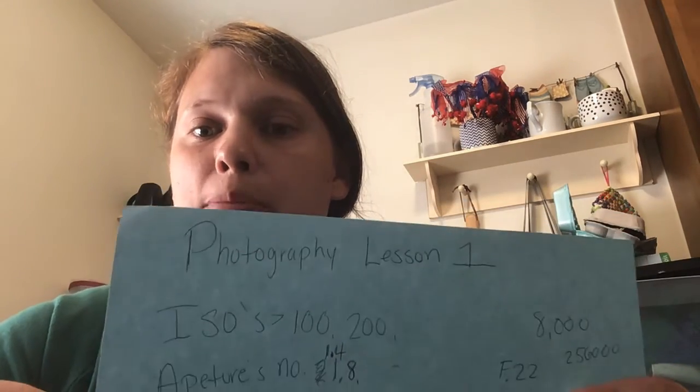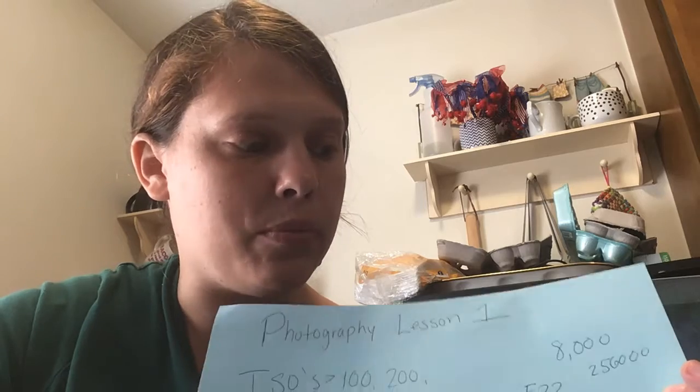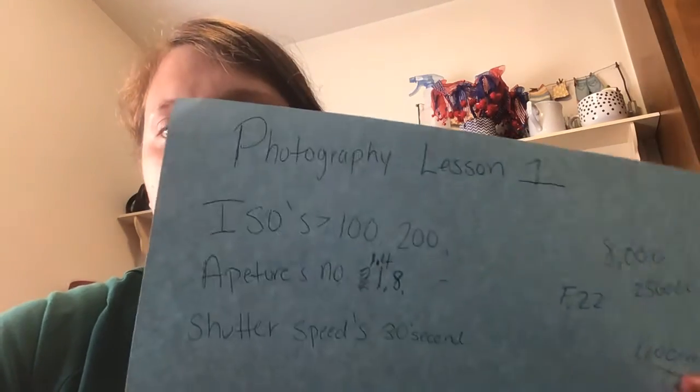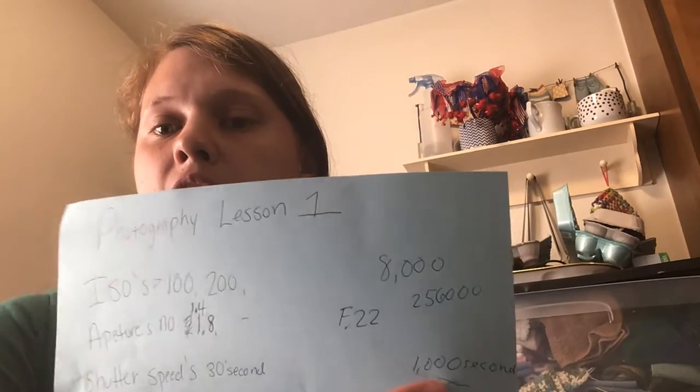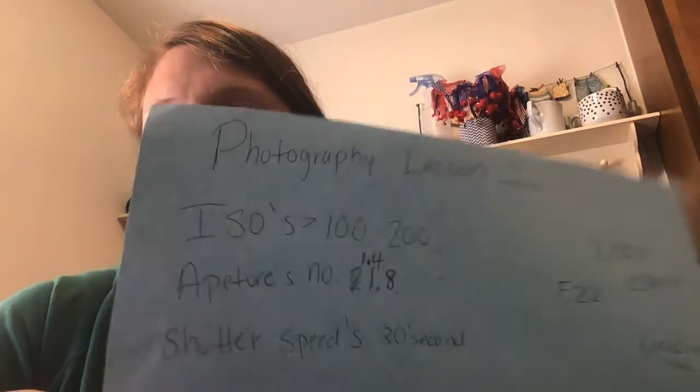Shutter speed ranges from a 15th of a second or even lower, up to a thousandth of a second or even higher — it captures what you shoot. For example, if you want to capture sports, you would need a higher shutter speed because it captures the fast movement. You also need a lot of light since gymnasiums are usually dark.